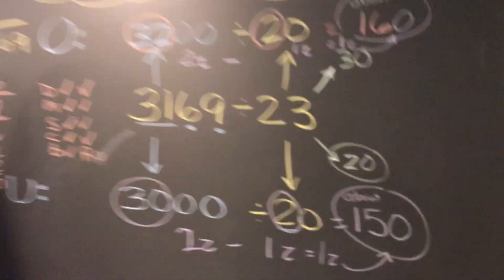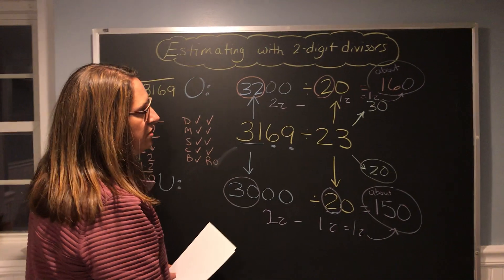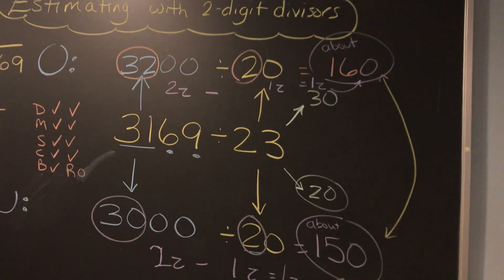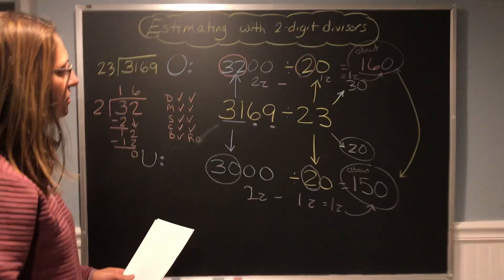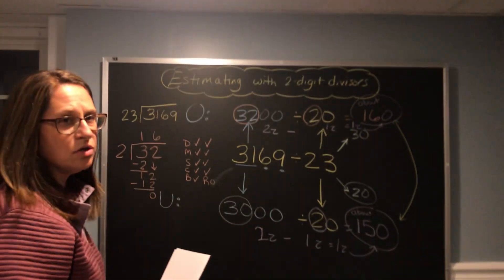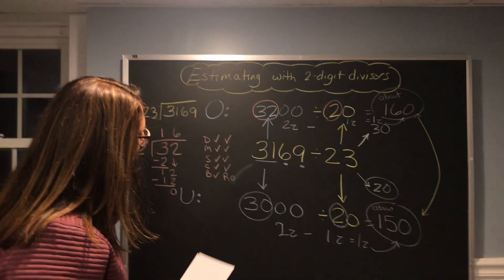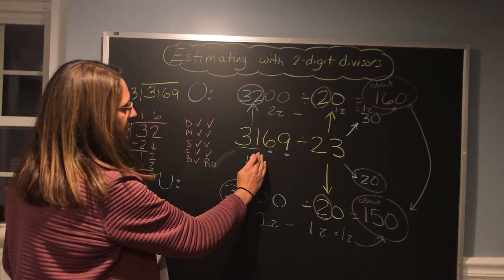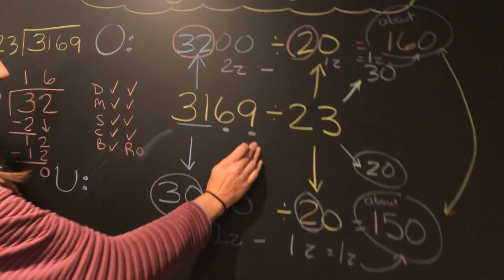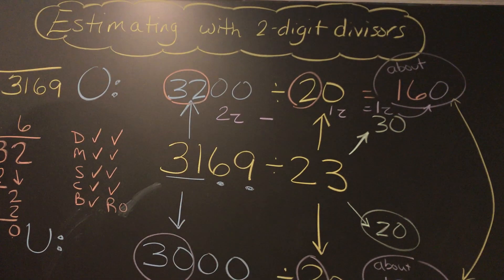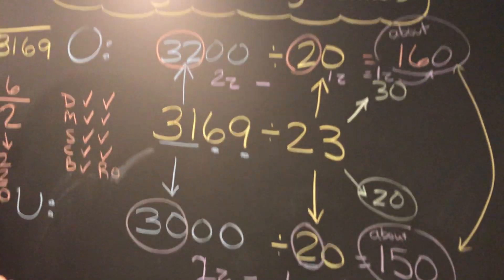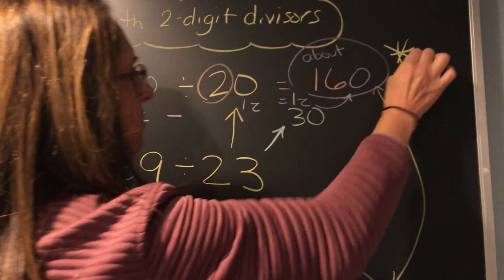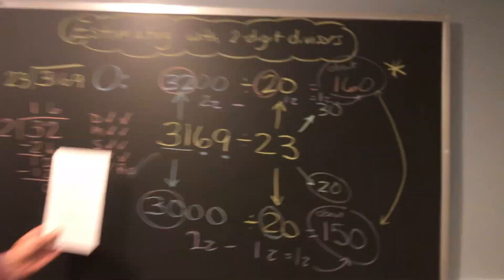So that means that your answer, when you do the actual division, should fall between 150 and 160. Which one is it going to be closest to? We have to look and see which one is a closer or better estimate. 3,169 is closer to 3,200 than it is to 3,000. So our best estimate here is going to be about 160 for the overestimate.